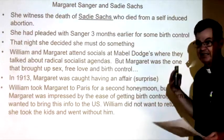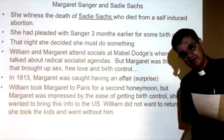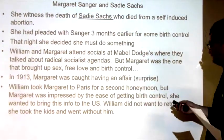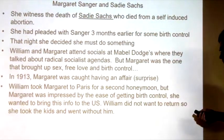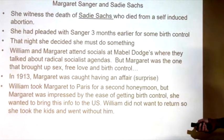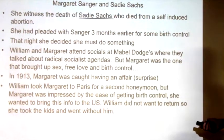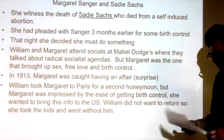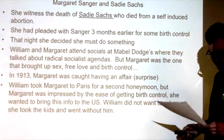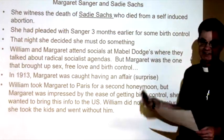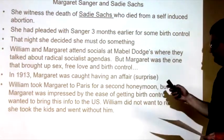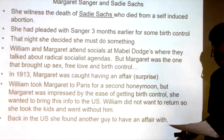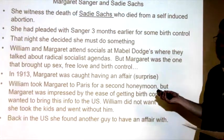In 1913, Margaret was caught having an affair — though it doesn't mean she didn't have other affairs. Number 20: was Margaret known for having affairs with other men? Yes — this probably wasn't the first and wouldn't be the last. William took Margaret to Paris for a second honeymoon, thinking getting away from the other guy might help. But Margaret was impressed by the ease of getting birth control in France and wanted to bring that information to the United States.